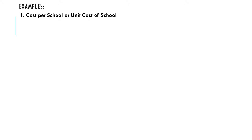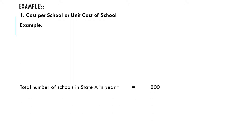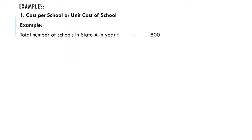We look at all the number of schools — this may be at a particular level, such as primary, secondary, or all levels. How much has been expended on those schools? You divide by the total number of schools to get the unit cost. It is always good to do it at different levels — primary, secondary, and tertiary — and within tertiary you can break it down further into university, polytechnic, and so on. For example, the total number of schools in State A in year t is 800.